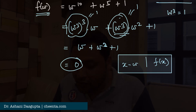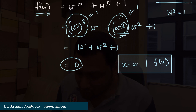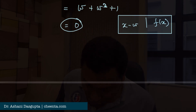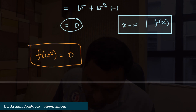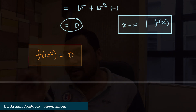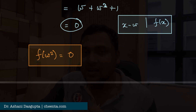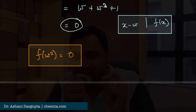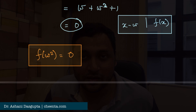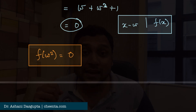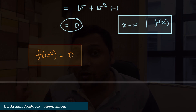I want you to try the second part: show that f(ω²) = 0 as well. Put the computation in the comment section — it's similar to what we just did with a slight difference. Thank you for joining today; keep on doing good mathematics and stay well.